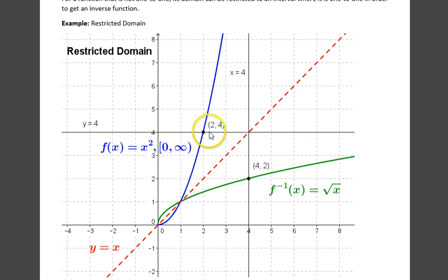we see that now this restricted version passes the horizontal line test. So, for any point like 2, 4, there's only one of them on a horizontal line. There will only be one equivalent point on a vertical line. And so, the square root of x here is the inverse of this restricted version of x squared.